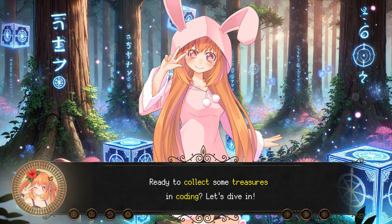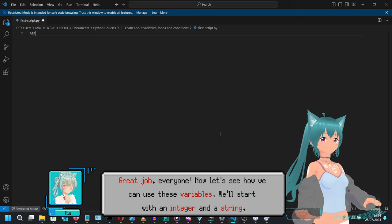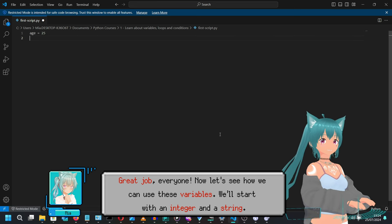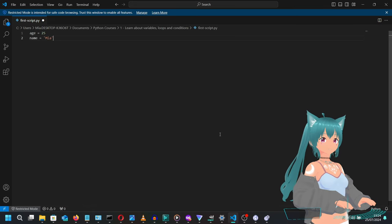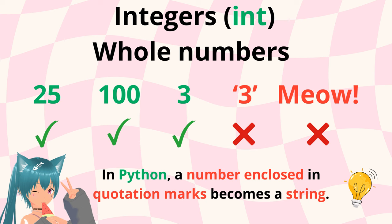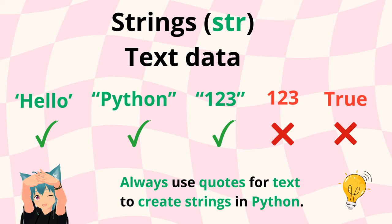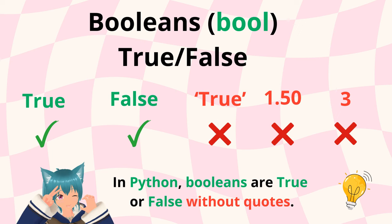Let's dive in. Great job, everyone. Now let's see how we can use these variables. We'll start with an integer and a string. So here, age is an integer and name is a string. And remember, use the right type for the right job: an integer for counting, a float for precision, a string for text, and a boolean for True/False values. Not for storing secrets, Ivan.